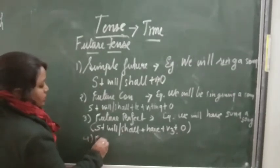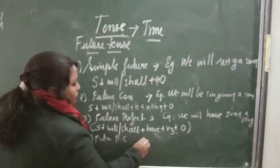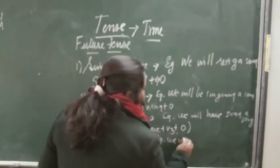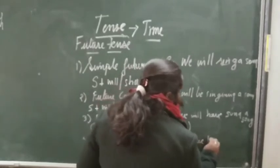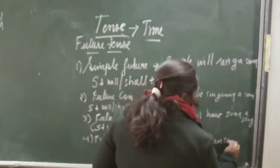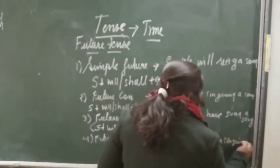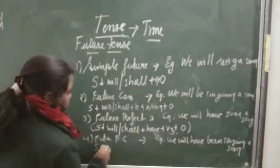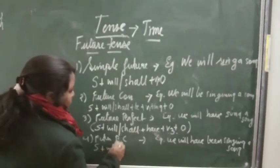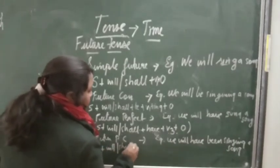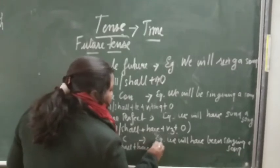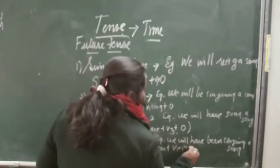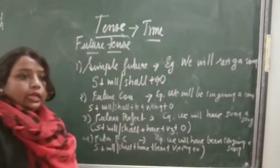Fourth is future perfect continuous. Here: we will have been singing a song. The structure is: subject plus will or shall plus have been plus verb first form plus -ing plus object.